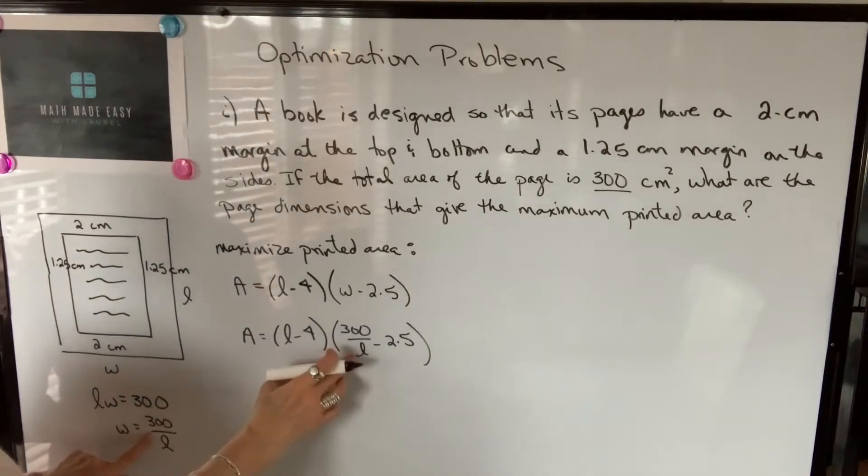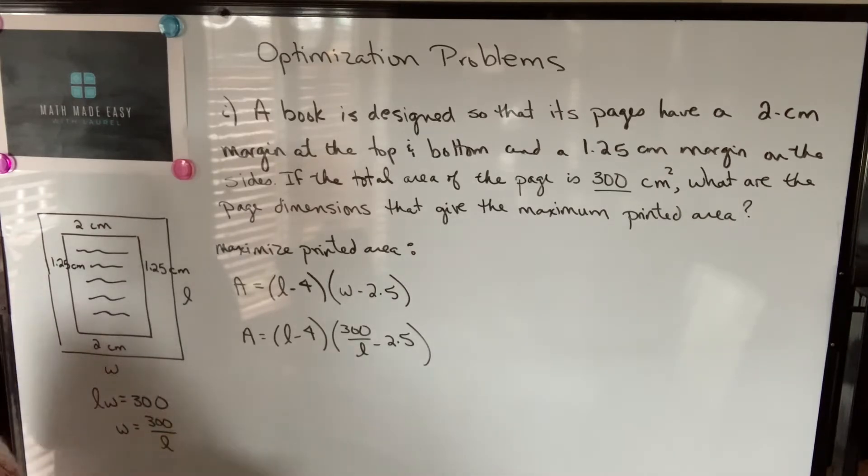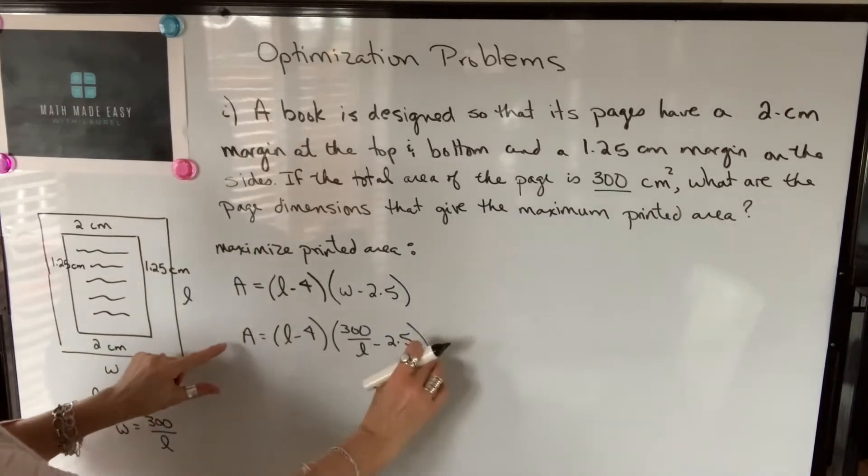So I'm putting that in for W, and that gives me a function with just one variable. Before I differentiate it and set it equal to zero and solve, I'm going to simplify it by multiplying.